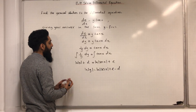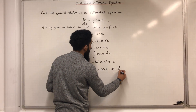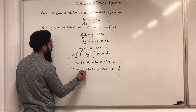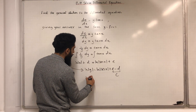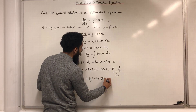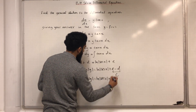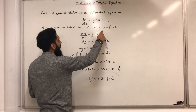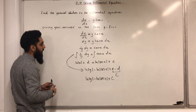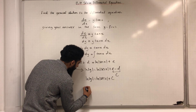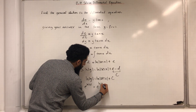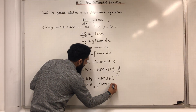I can take this a step further and make ln|y| the subject, giving me ln|y| equals ln|sec x| plus e minus d. Now e minus d is a constant, I can call it c. So I can go from this step straight to: ln|y| equals ln|sec x| plus c. I want my general solution in the form y equals f of x, so I need to apply e to the power of both sides, giving me e to the power ln|y| equals e to the power of ln|sec x| plus c.